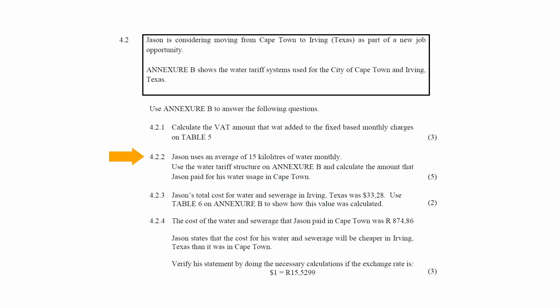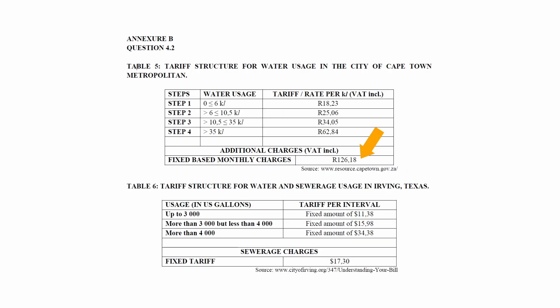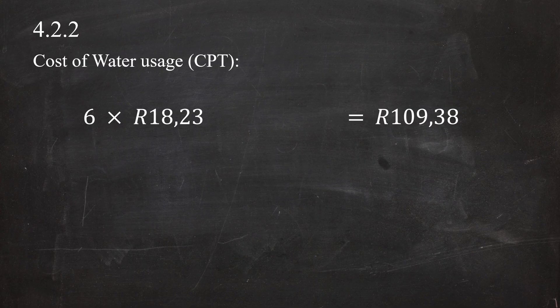In question 4.2.2, Jason uses an average of 15 kiloliters of water monthly. Using the water tariff structure in Table 5, there is a fixed monthly charge of R126.18 regardless of water used. Since tariffs are on a sliding scale, step one covers 6 kiloliters at R18.23 per kiloliter, costing R109.38. Step two covers 4.5 kiloliters (from 6 kL to 10.5 kL) at R25.06, costing R112.77.